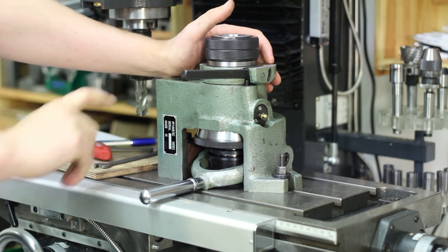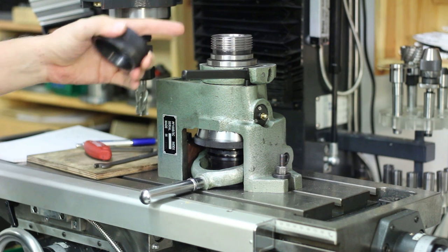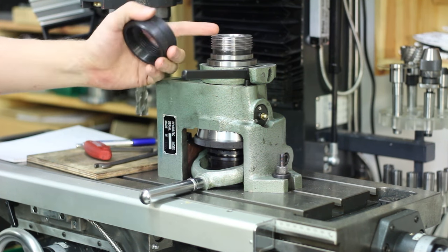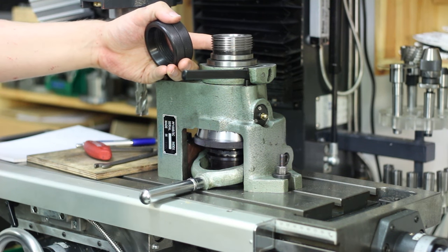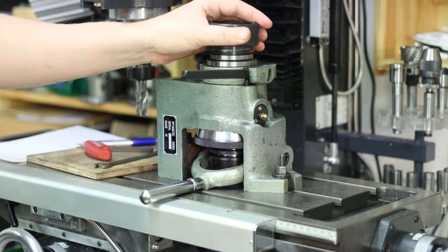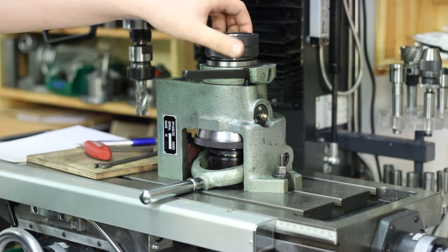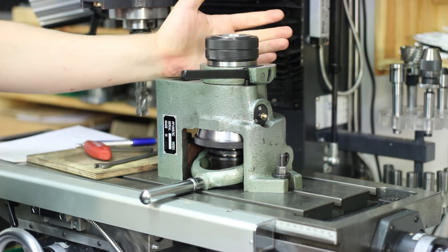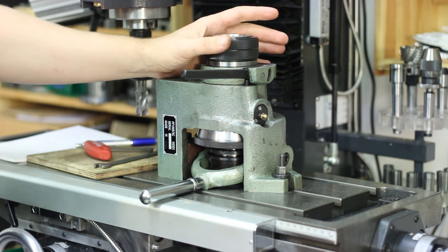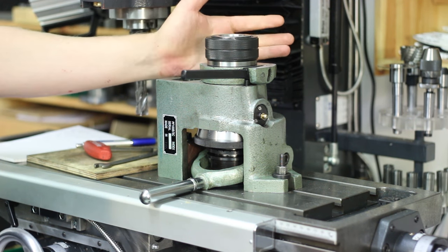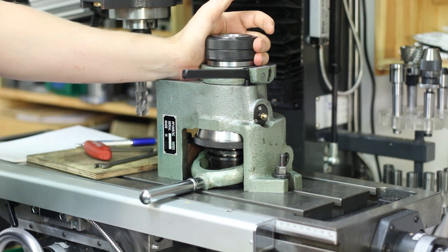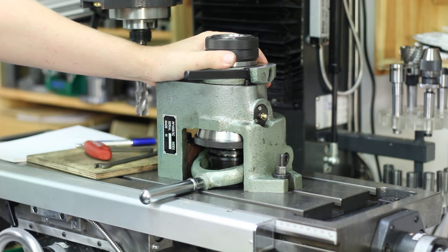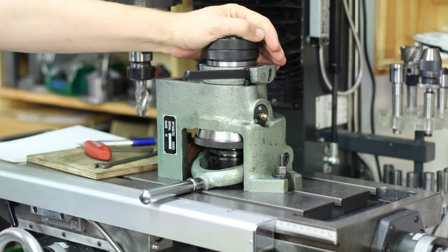It takes 5C collets and it has a big hunting thread for a chuck back plate which I might never use. Be aware that this indexer is quite big. On a mini mill or something like that this thing is too big.